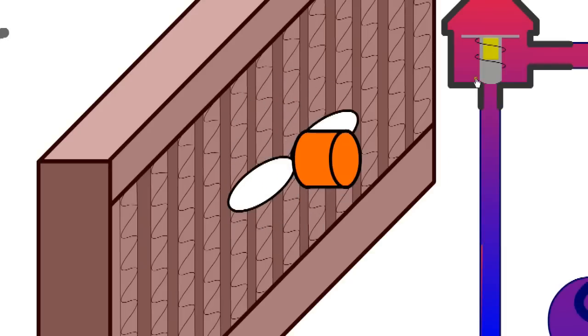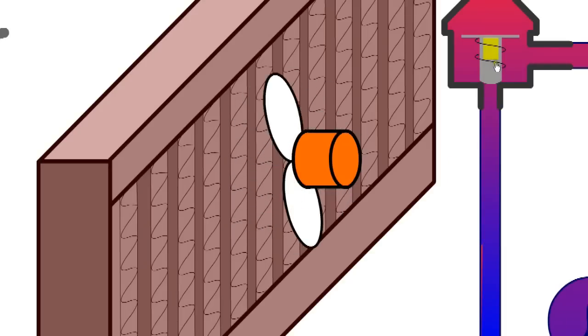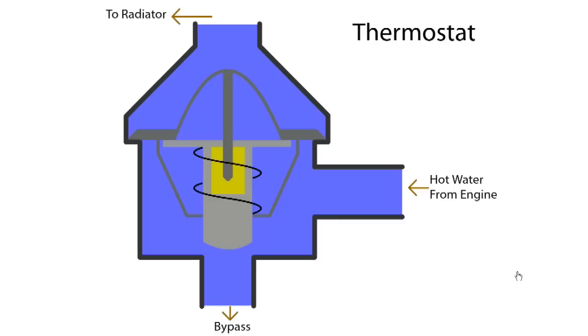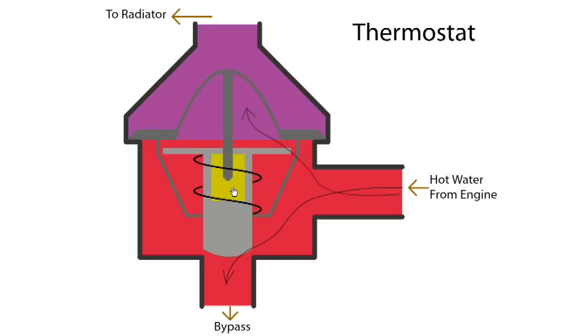We now take a closer look at the thermostat. With a cold engine, water is directed back to the pump, bypassing the radiator. This prioritizes engine and compartment heating. The thermostat comprises a chamber filled with wax. When the engine starts, the water heats, the wax melts and expands, exerting force on a pin and changing the valve position, allowing coolant to flow through the radiator where it is cooled.